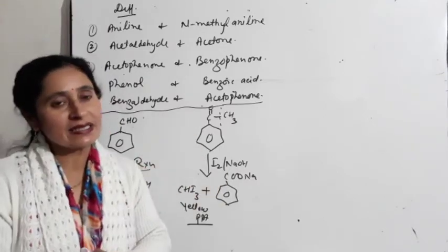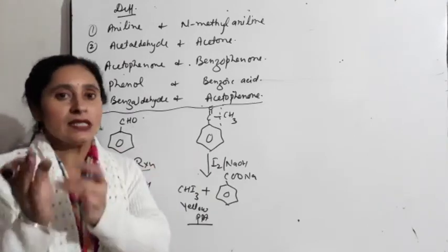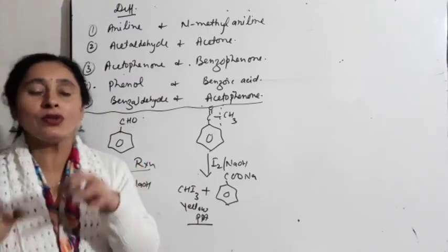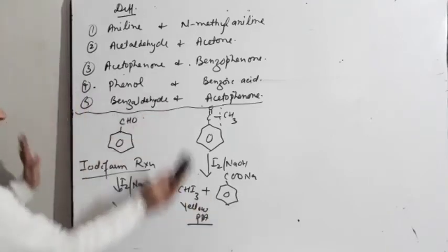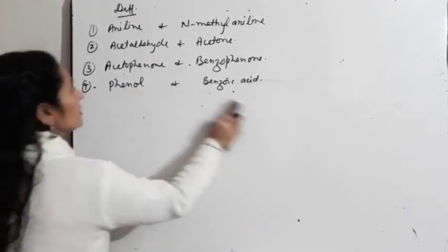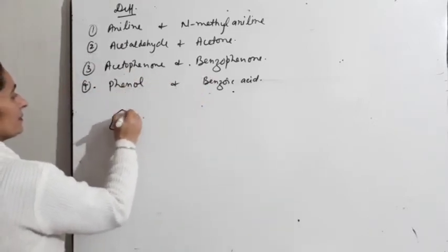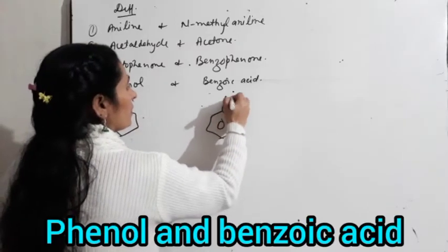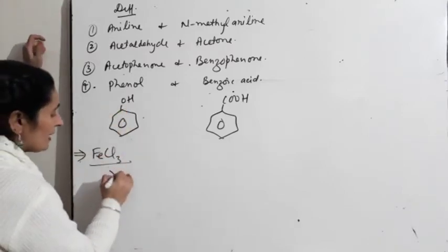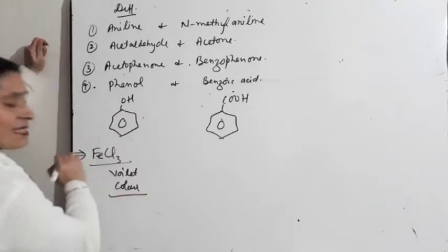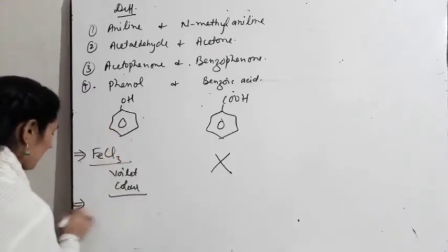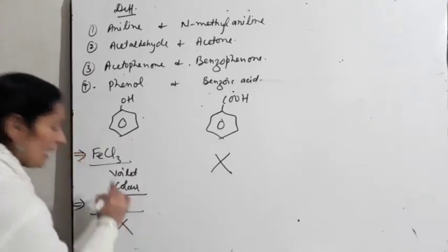Aldehyde versus ketone difference: you can make use of silver mirror test, Fehling's solution test, or Benedict's solution test. Mix Fehling's A plus Fehling's B — under no reaction for ketone. But carboxylic acids react with sodium bicarbonate and release carbon dioxide with effervescence — sound ke saath — so pata chal jata hai.